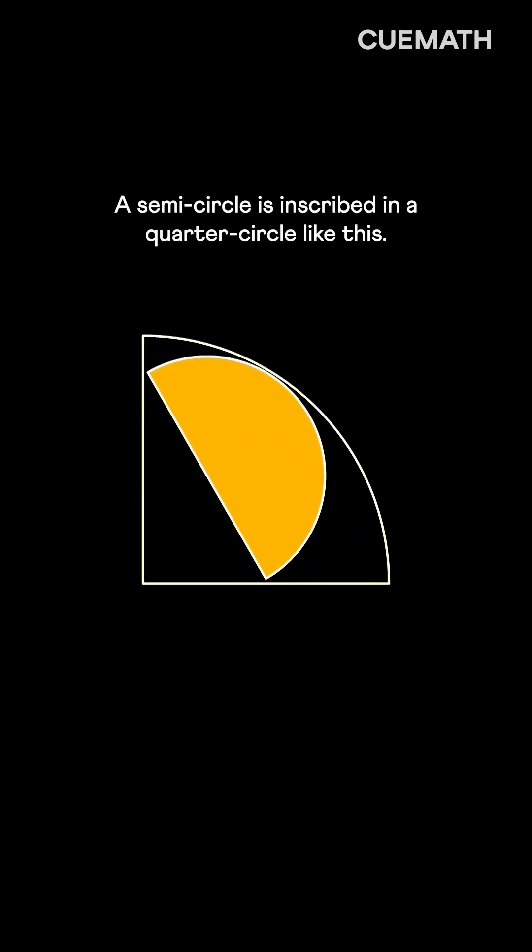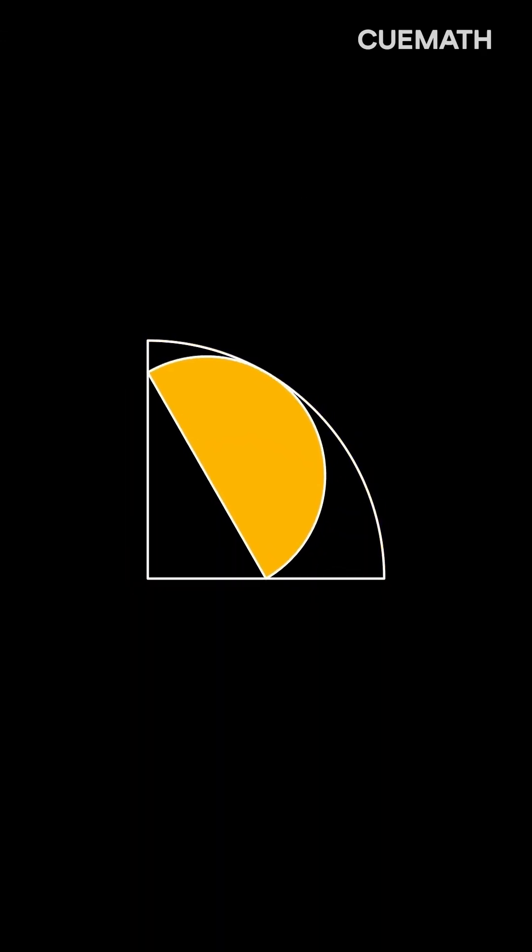A semicircle is inscribed in a quarter circle like this. What fraction of the quarter circle is shaded?